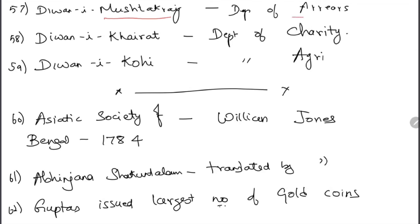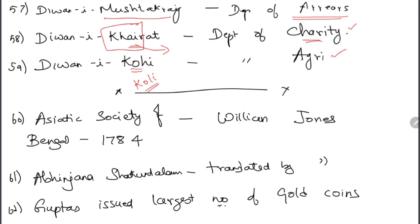Diwani-i-Khairat was charity — 'kai' means hand in South Indian languages, charity is about giving from the hand. Diwani-i-Kohi was agriculture — remember 'koli' (hen) is part of agriculture. Asiatic Society of Bengal was founded in 1784 by William Jones. Abhijnanasakuntalam was also translated into English by William Jones.